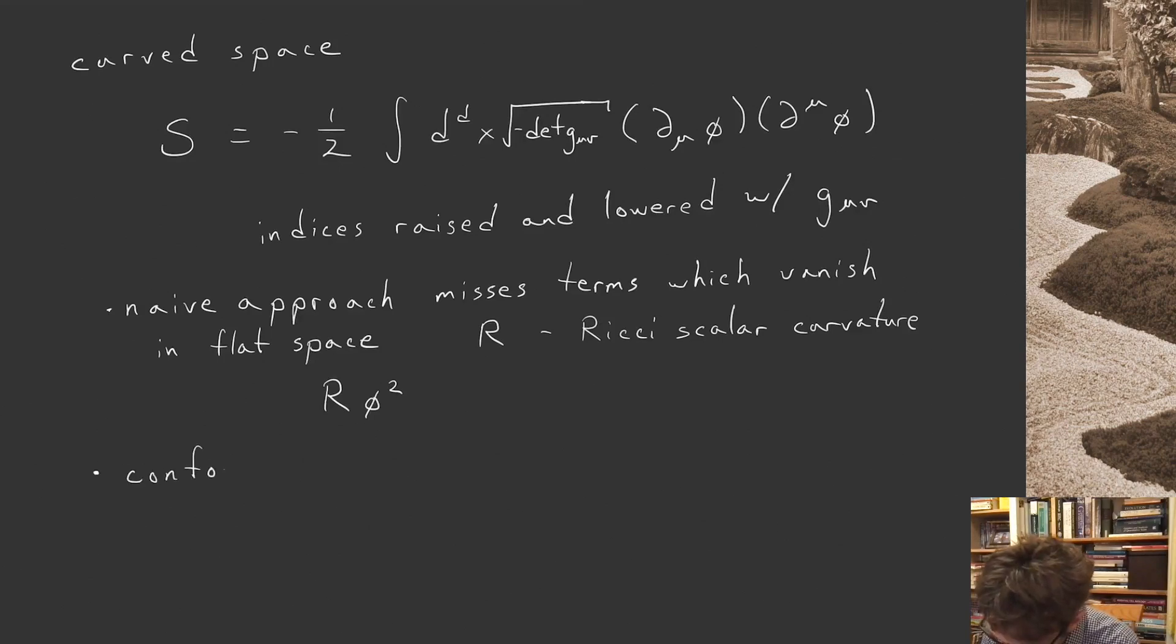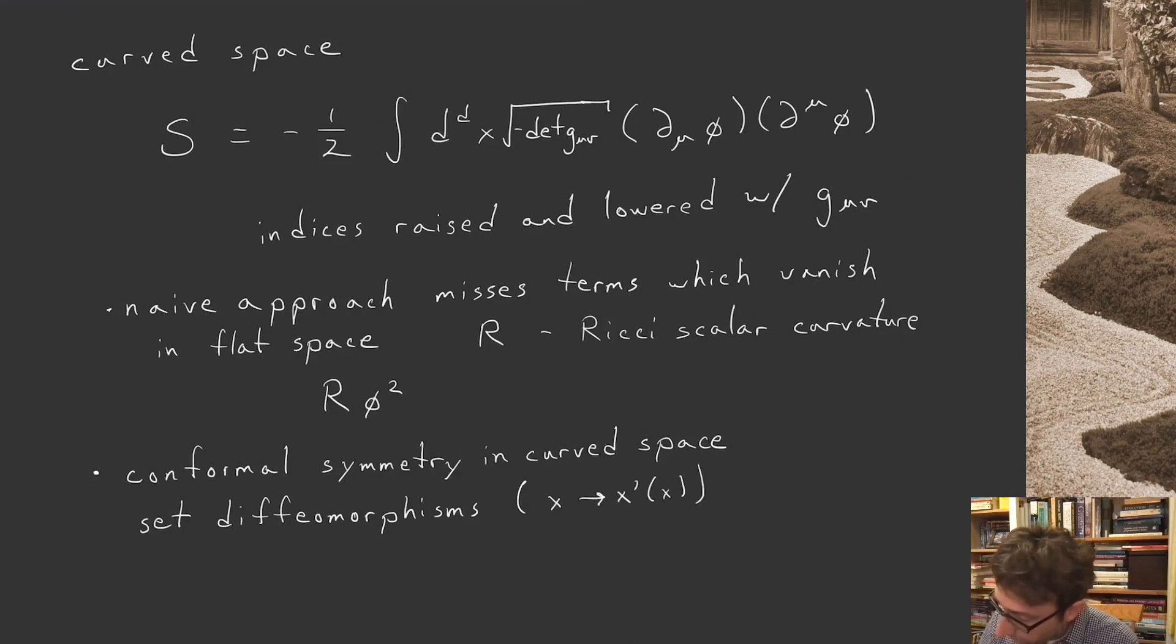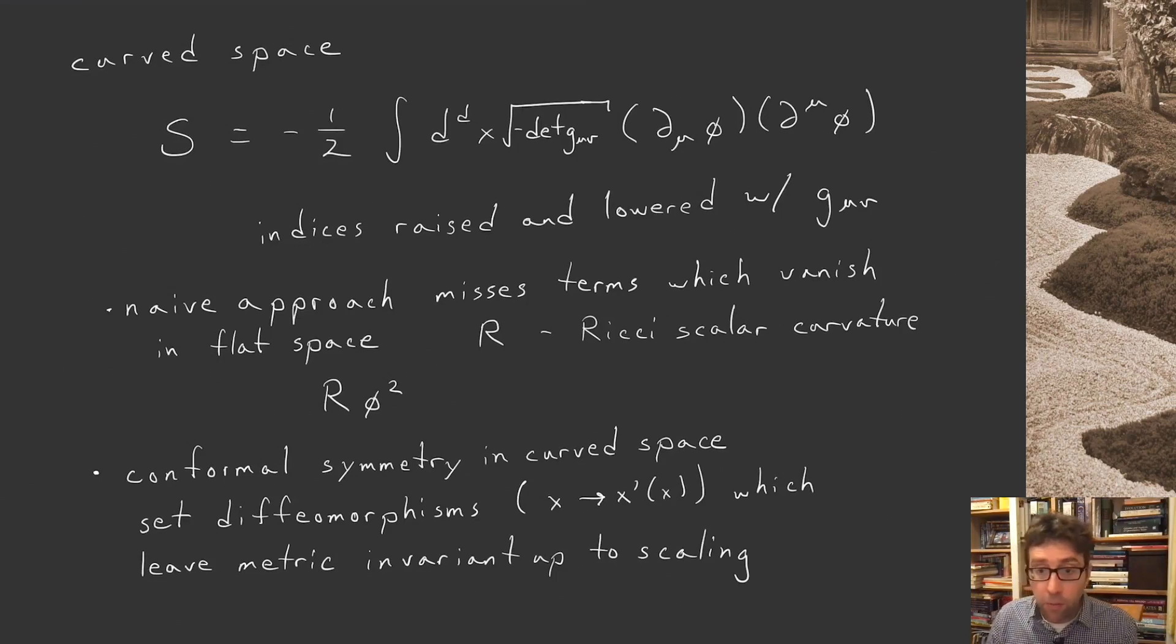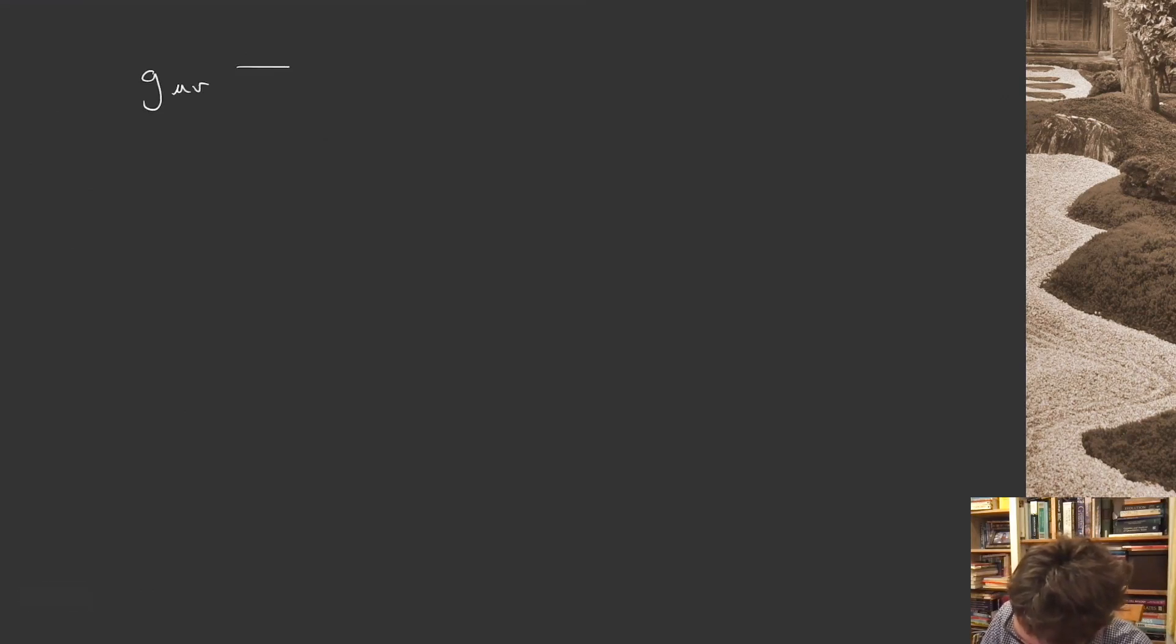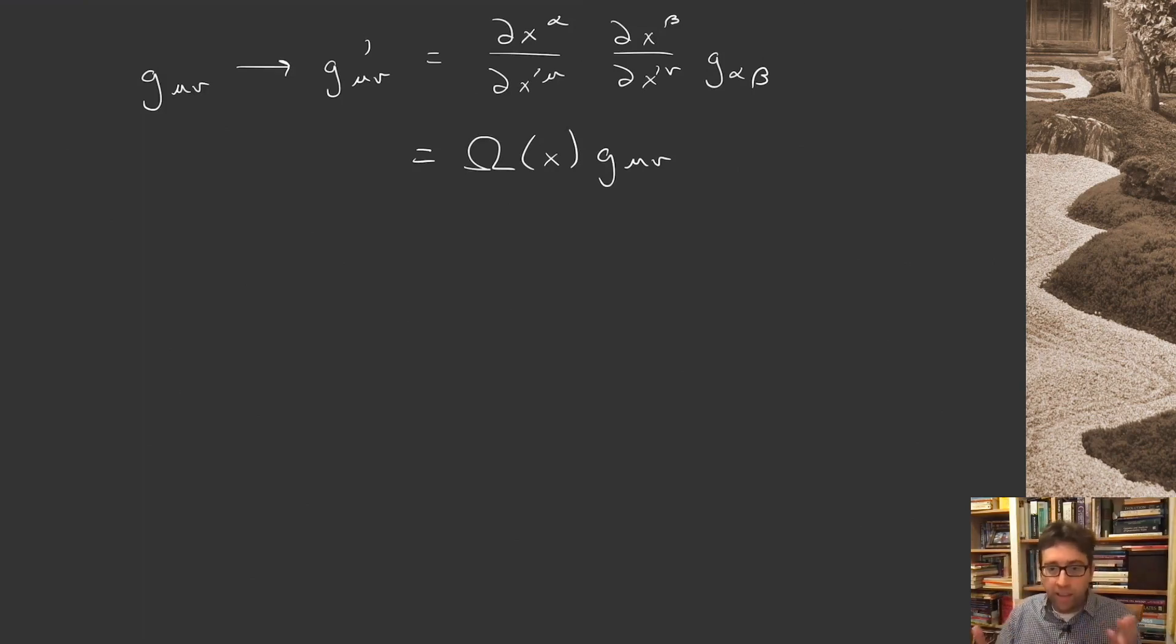What is conformal symmetry in curved space? It's the set of coordinate transformations, or diffeomorphisms, x → x' which is a function of the old coordinates, which leave the metric invariant up to scaling. We send the full metric to a new metric, contracting with Jacobian factors dx^α/dx'^μ dx^β/dx'^ν g_αβ. For this to be a conformal transformation, we write this as a local function Ω(x) times the original metric g_μν.